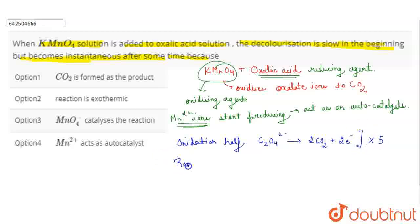Reduction half: MnO4- + 8H+ + 5e- → Mn2+ + 4H2O